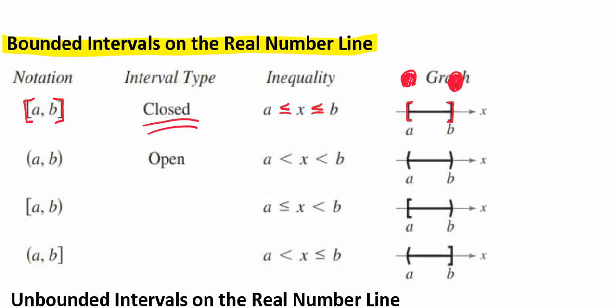Now that we're talking about intervals in this sense, we're going to be using brackets and parentheses. In our next example, we have parentheses on the left side and the right side, which means that this interval is open. So we say that A is less than X, which is less than B. When we graph that, we put parentheses on the end points instead of brackets.